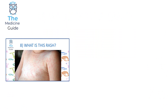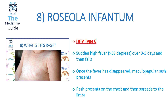Rash 8 is Roseola infantum, caused by human herpesvirus type 6. A child typically presents with a sudden high fever greater than 39 degrees, which persists over three to five days and then rapidly falls. Once the fever disappears, a macular papular rash presents on the chest and then spreads to the limbs.